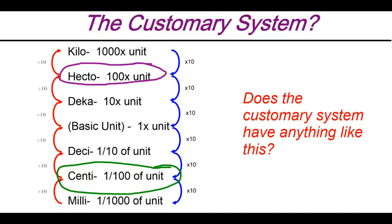Pause the video and write down your thoughts on whether or not the customary system has anything quite like this, where it's easy to use things in multiples of 10 to convert, and if not, why you feel that's not the case. The answer is the customary system really doesn't have anything like that. We can see this even if we just look at units of length.